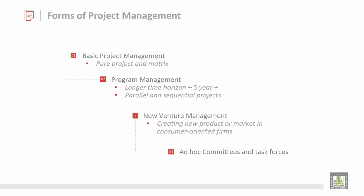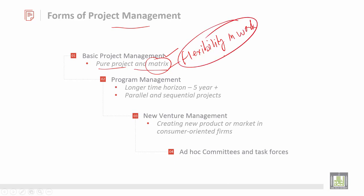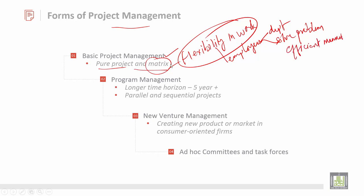There are four forms of project management. The first is basic project management, which is a pure project and matrix. Matrix refers to flexibility in work — specifically, flexibility where employees can work in any department with colleagues to solve problems in an efficient manner. That is the importance of matrix.